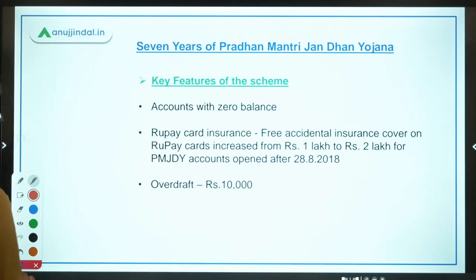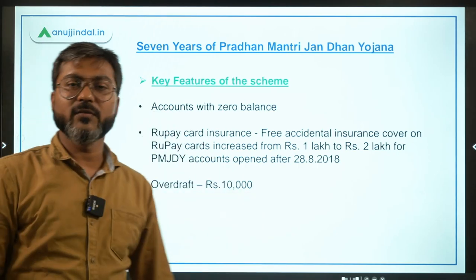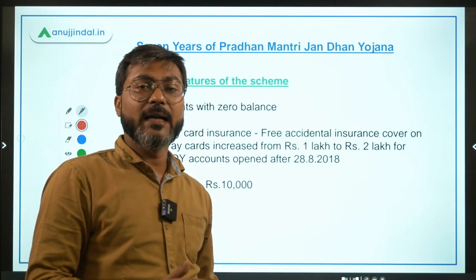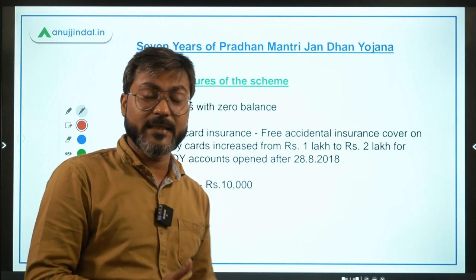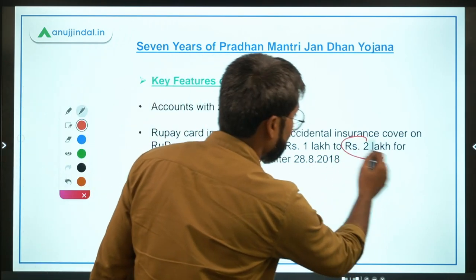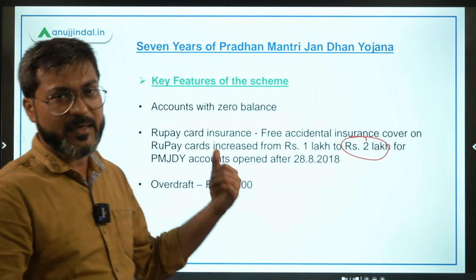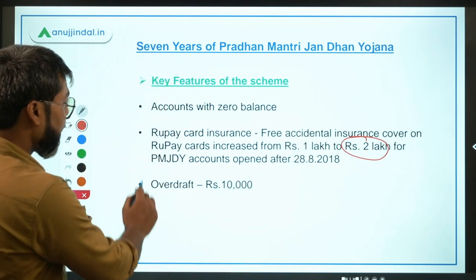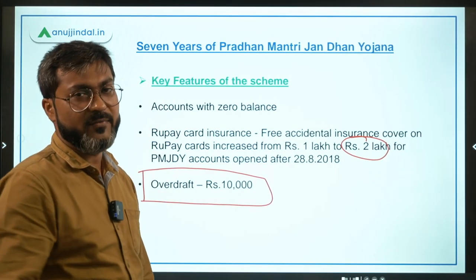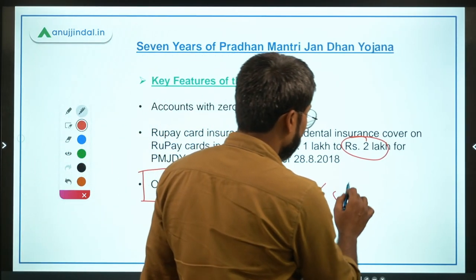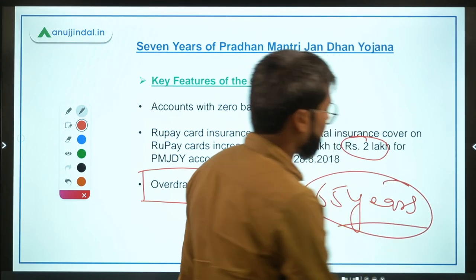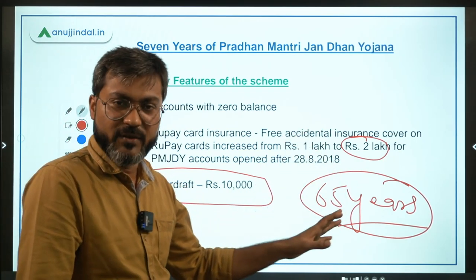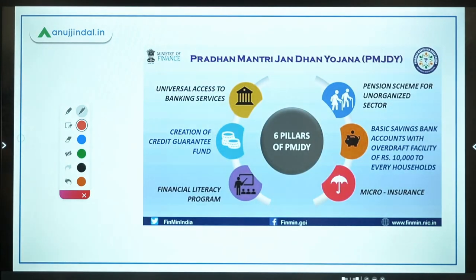Some key features of Pradhan Mantri Jan Dhan Yojana: a zero-balance bank account can be opened under this scheme. The age limit for the accidental insurance facility was increased up to 65 years. These are the important features to remember for the exam.